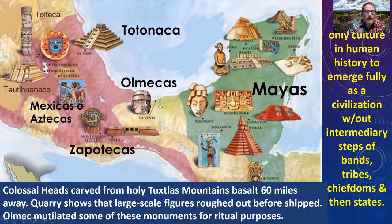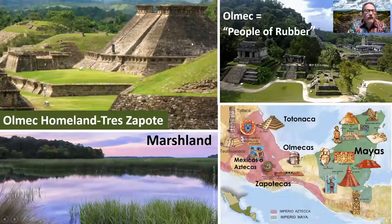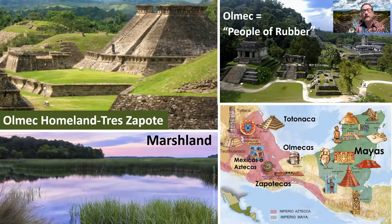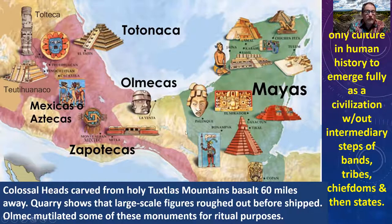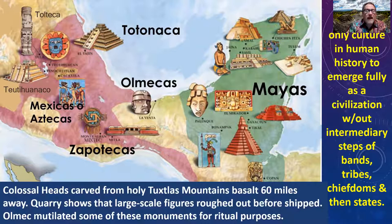What makes the Olmec amazing is that they are the only culture in all of human history to emerge fully as a civilization without intermediate steps of bands, tribes, chiefs, and then states. It's as if there was nothing, and now we have a fully fledged civilization. We don't see the developmental stages we see with the Pueblo or with Greek and Mesopotamian civilization. Their artwork looks like no other artwork anywhere else in the world, which suggests they did not come from another fully developed civilization.